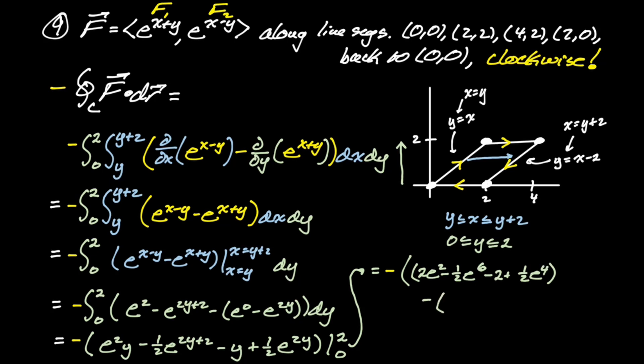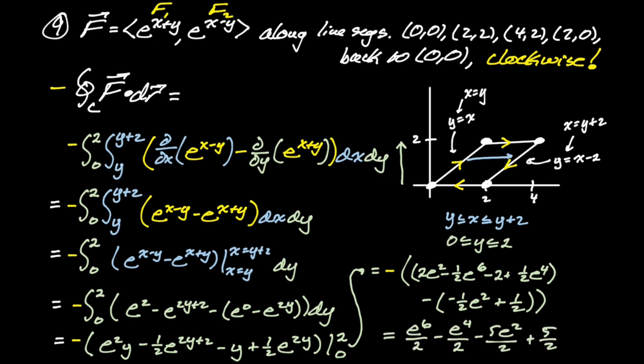There are a lot of chances to make sign mistakes here. Integrating: e² · y − (1/2)e^(2y+2) − y + (1/2)e^(2y), evaluated from 0 to 2. Subbing in and simplifying — being careful with negatives — the final answer is e⁶/2 − e⁴/2 − 5e²/2 + 5/2. That's number nine.